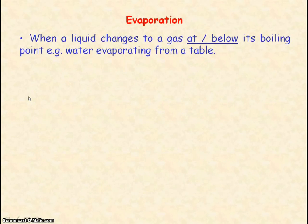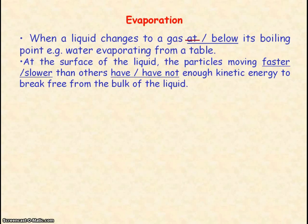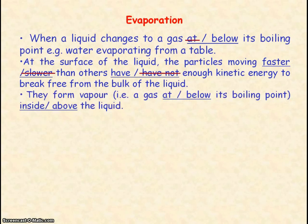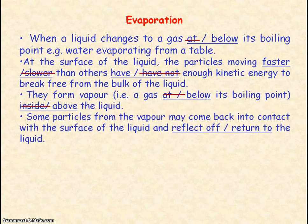Evaporation is when a liquid changes into a gas below its boiling point. At the surface of the liquid, it is the particles that are moving faster — they have enough kinetic energy to break free from the bulk of the liquid. These particles form a vapour above the liquid, that is they form a gas which is below its boiling point above the liquid. However, some of the vapour particles do come in contact with the surface of the liquid and return back to the liquid.